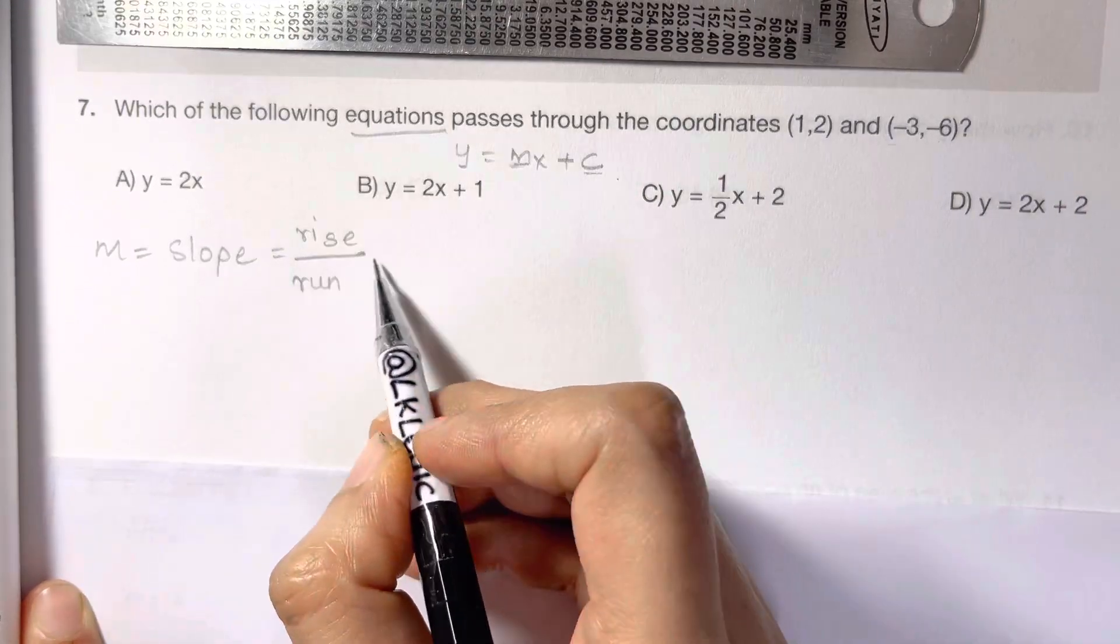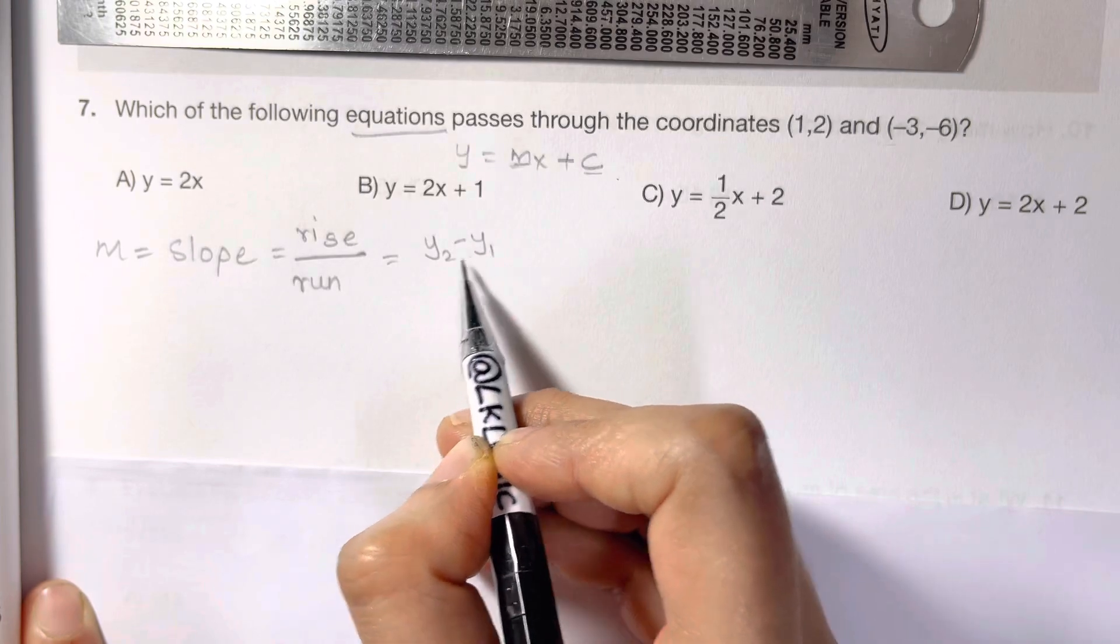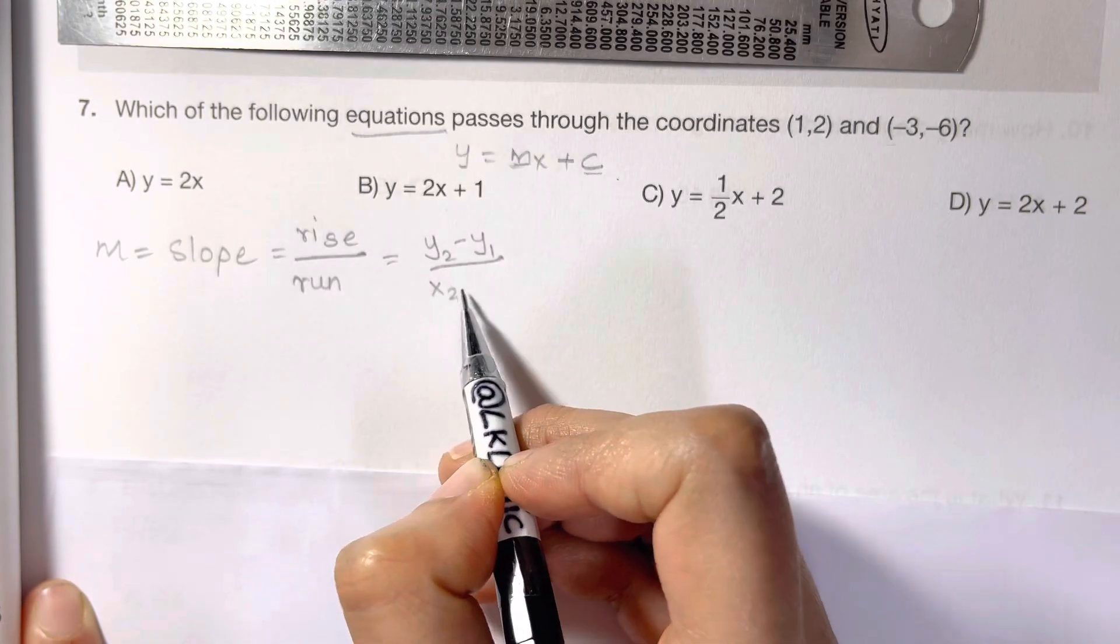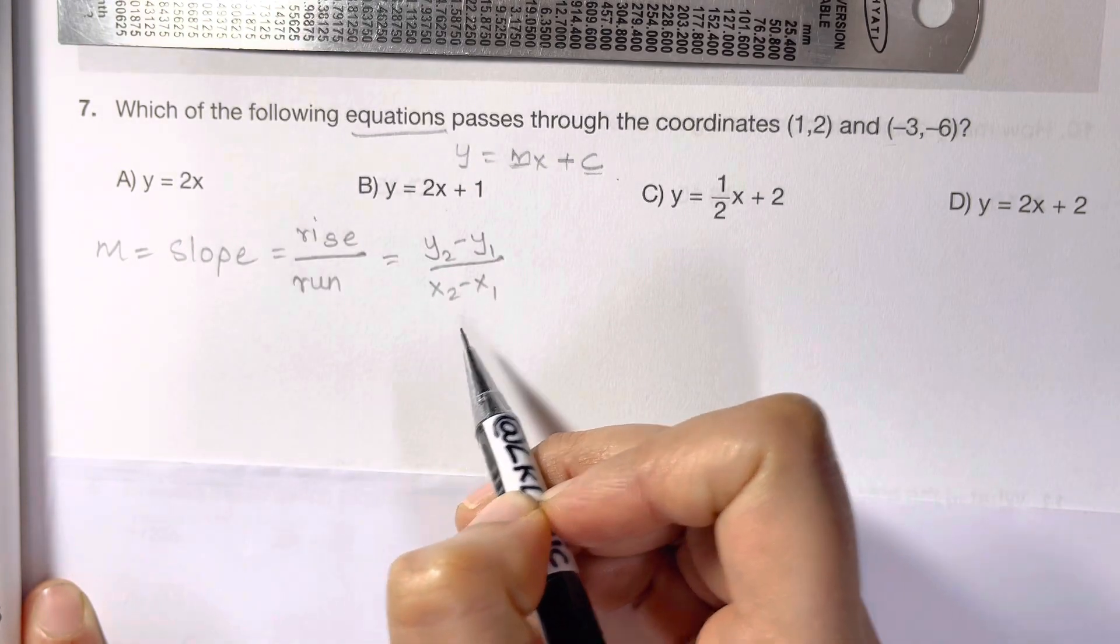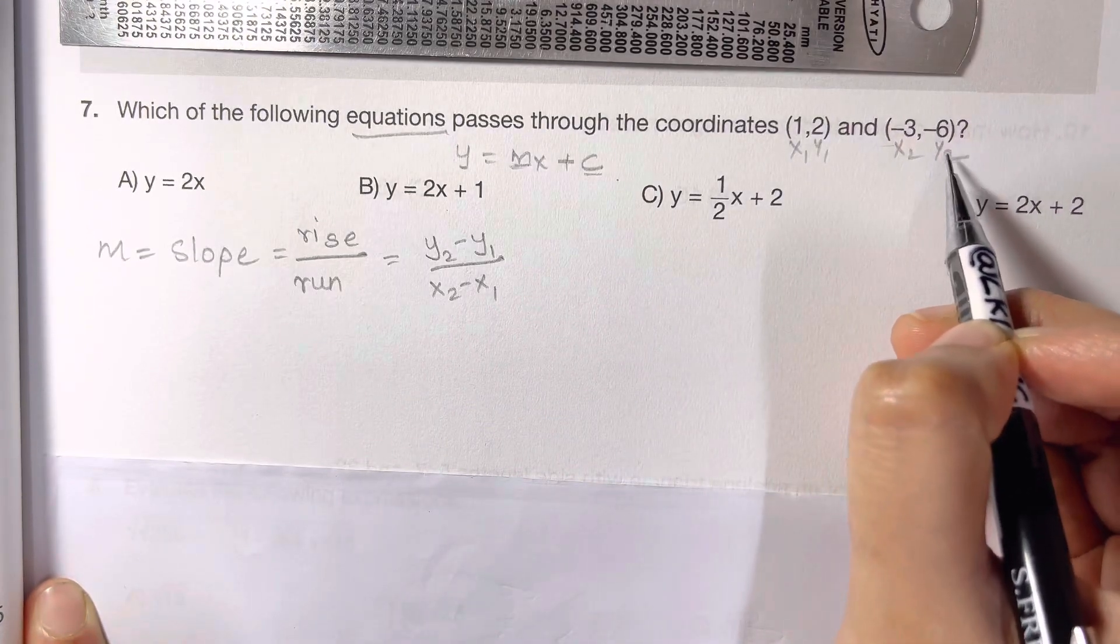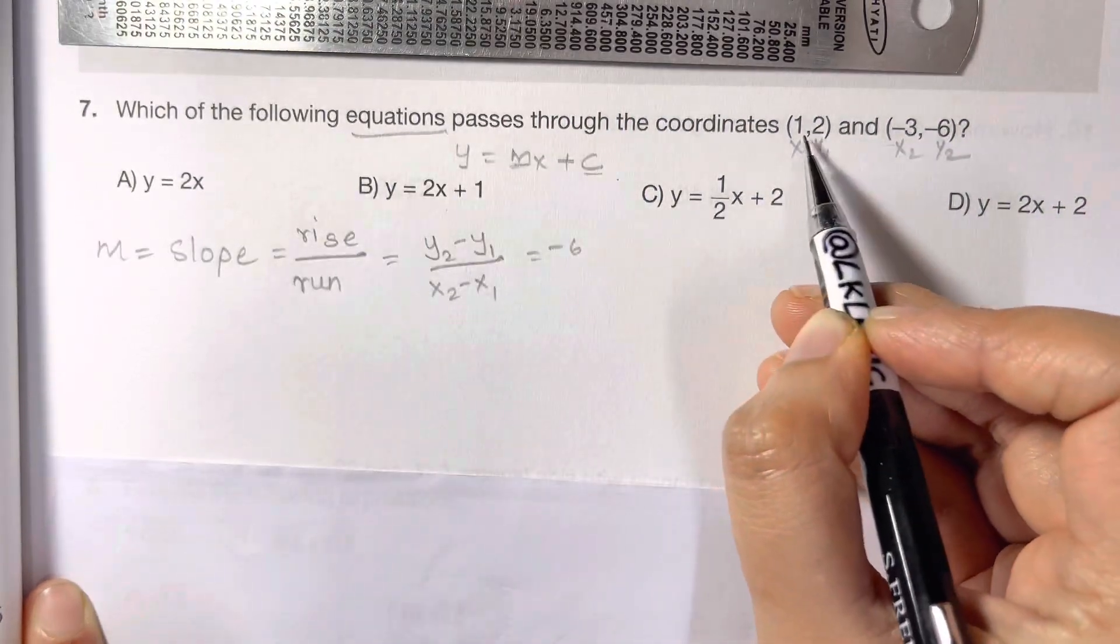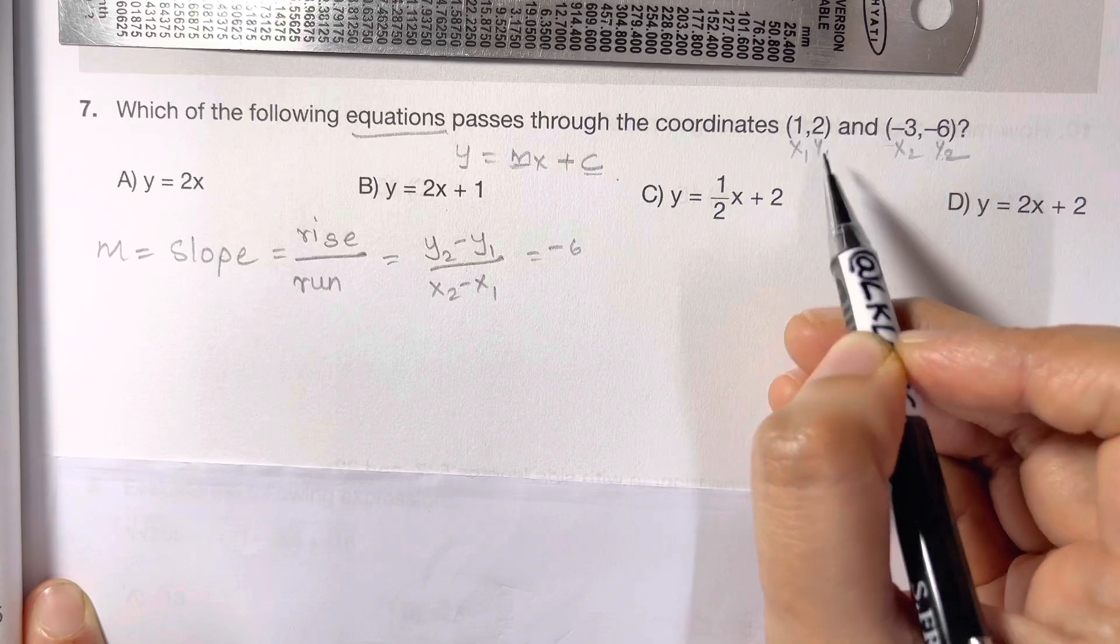Rise over run is given by y2 minus y1 over x2 minus x1. Now you have two points: this is x1, this is y1, x2, y2. So y2 is negative 6 and y1 is 2.